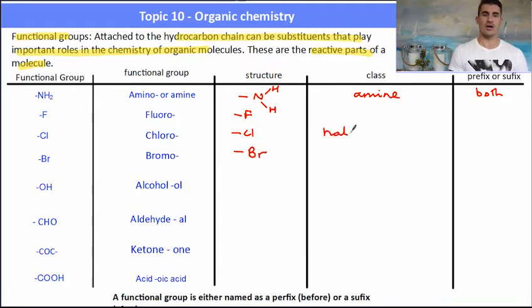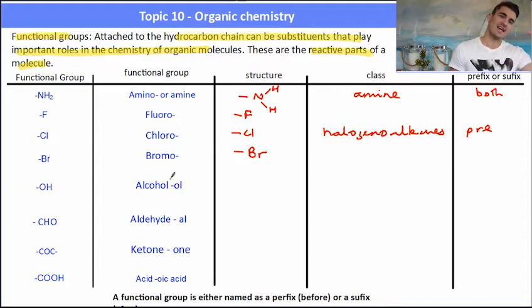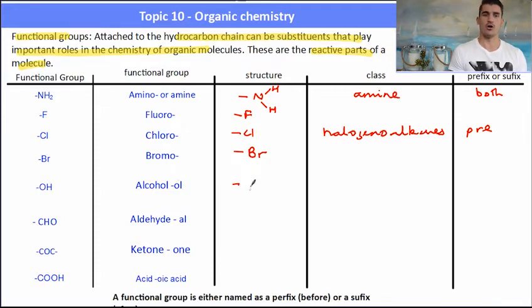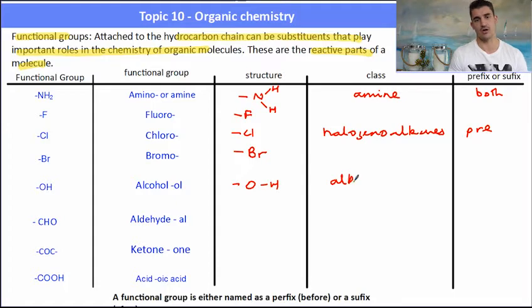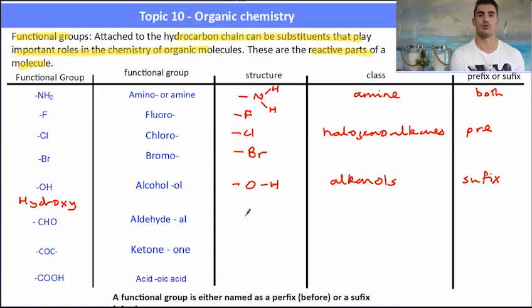Fluoro, chloro, and bromo are all halogens, so their class is described as halogeno alkanes. Their functional group could be called a fluoro, a chloro, or a bromo, and they're generally named as a prefix at the start of the molecule's name. An alcohol has the functional group OH. Its class is described as an alkanol — use the word alkanol because that's what the IB asks. The OH is referred to as a hydroxy functional group, and it's generally named as a suffix, so we might have something like butanol or propanol.